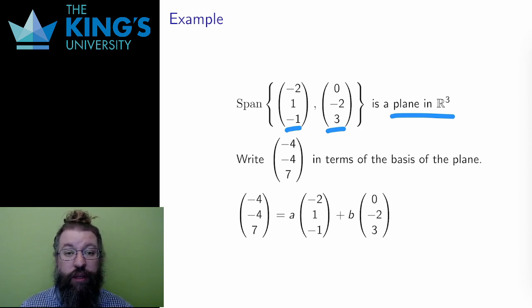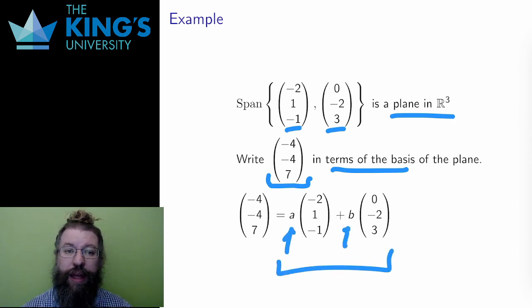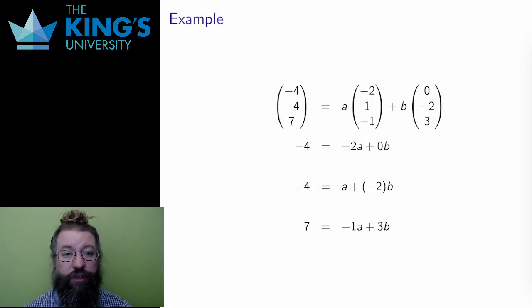I have another vector (-4, -4, 7), which I think is on the plane. And I want to write it in terms of this basis, as a linear combination of this basis. This is the form of a linear combination. I want to find constants A and B that make this work. Let me write the three equations I get by looking at the first, second and third components of these vectors.